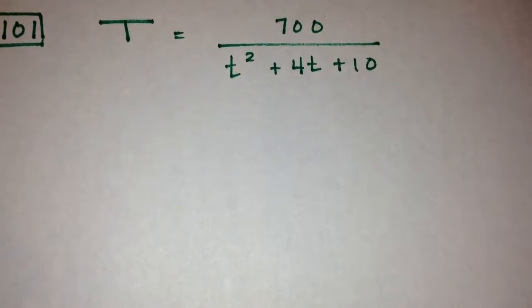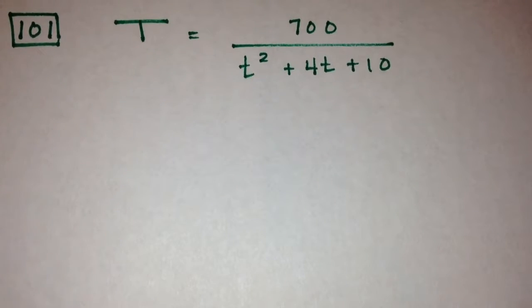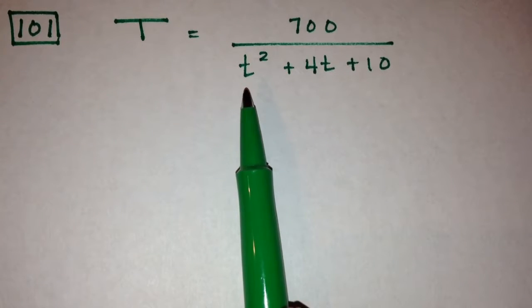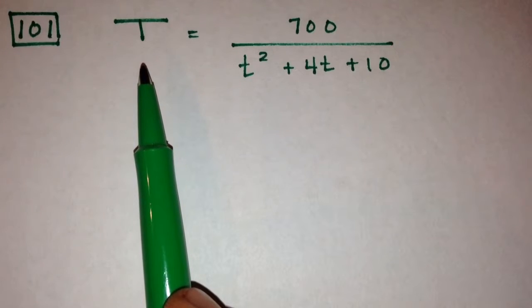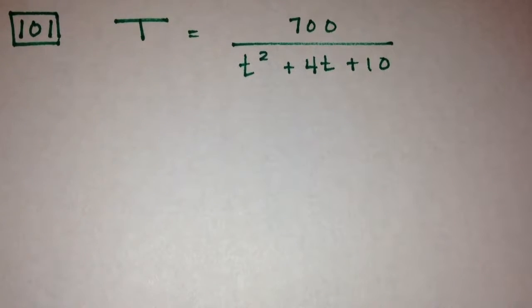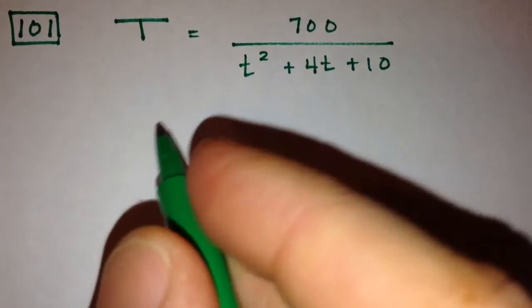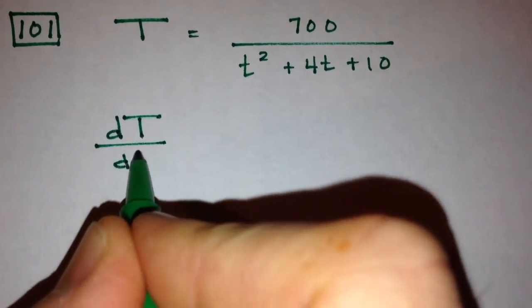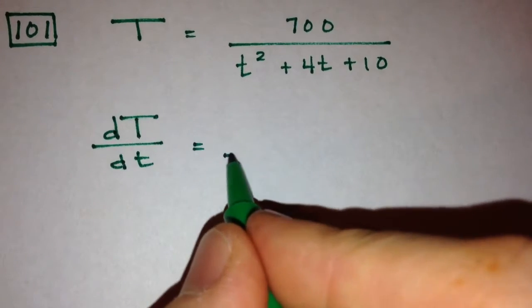In problem 101, we are given a function that relates the time in hours to the temperature in degrees Fahrenheit. And we're asked to describe at a number of times how quickly the temperature is changing. So we want the rate of change of temperature over time.